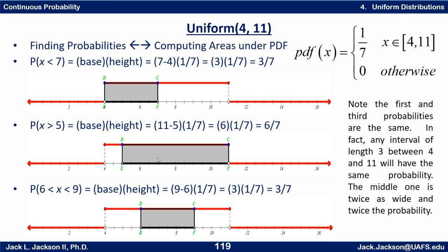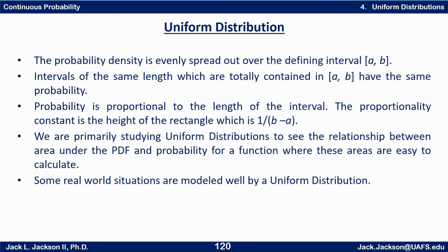And the one in the middle has a base that's twice as long, so it has an area twice as much. And so the probability is proportional to the length of that base. The probability density is evenly spread out over the defining interval from a to b. Intervals of the same length which are totally contained in [a,b] have the same probability. Probability is proportional to the length of the interval. The proportionality constant is the height of the rectangle, which is 1 over (b minus a).